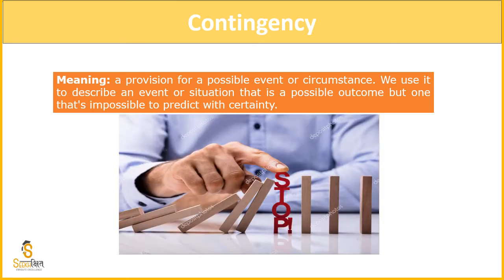This is a very good example — this is called the Domino effect. What happens in this? This is a straight line: if one falls, they will start to fall one by one. So we have to make a contingency plan — if we are going to fall, we will stop it one by one. That is a contingency plan for your future.